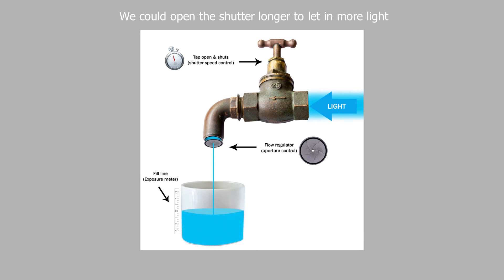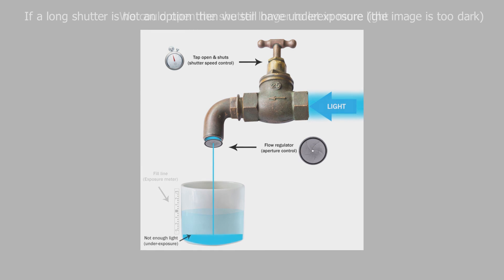We could open the shutter longer to let in more light. If a long shutter is not an option, then we still have underexposure.